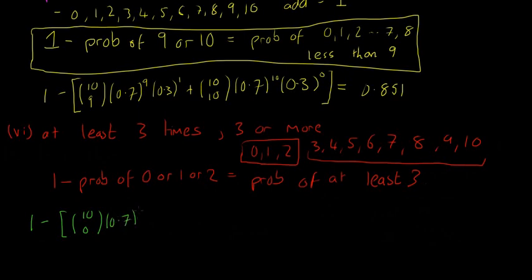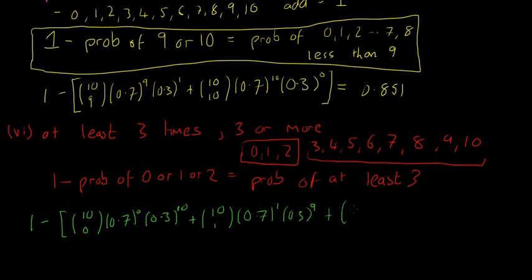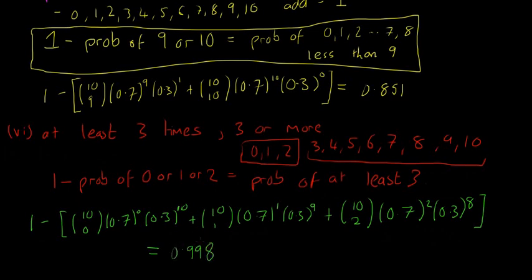The calculation is: 1 minus [ (10 choose 0) × 0.7⁰ × 0.3¹⁰ + (10 choose 1) × 0.7¹ × 0.3⁹ + (10 choose 2) × 0.7² × 0.3⁸ ]. Sticking all of that into the calculator gives 0.998. So the probability they have potatoes at least three times is very high. This is the same principle as part five — make sure you understand this type of question.